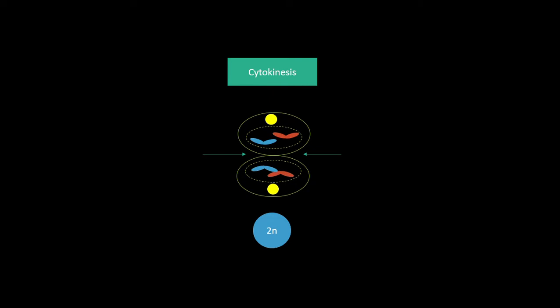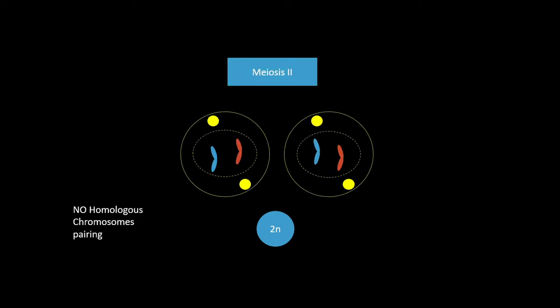In telophase, they have moved all the way to the poles. Finally, cytokinesis, in which a cleavage furrow forms at the center of the cell and pinches the cell in two. Now we are left with two diploid cells with 2n genetic data each, but remember we need to get to 1n, so meiosis 2 will start to take place.